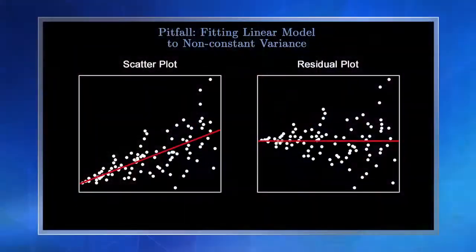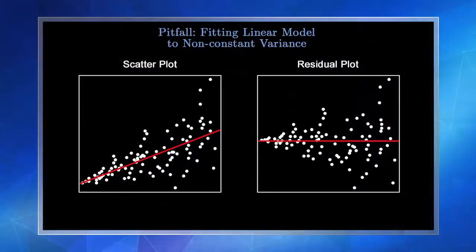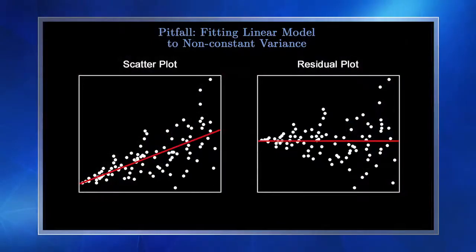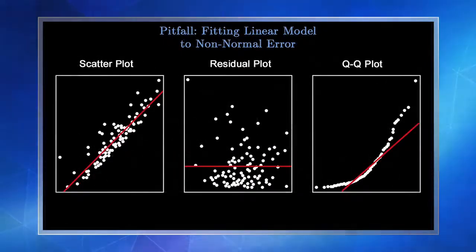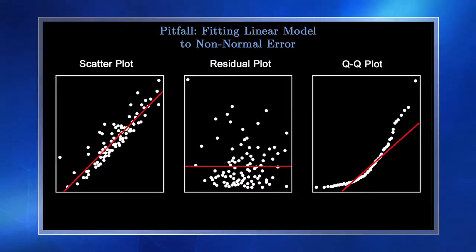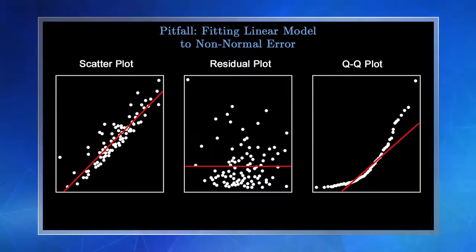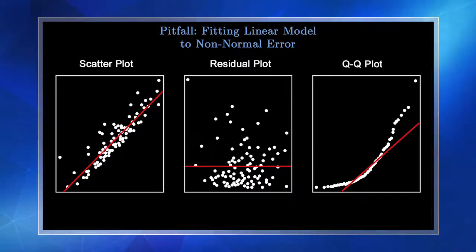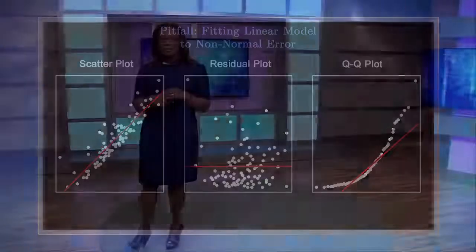The second pitfall is fitting a linear model to data with non-constant variance. The variance of y is increasing as x increases — still heteroscedastic. The third pitfall is fitting what appears to be a good model but actually has non-normal error. The initial scatter plot might fool us into fitting a linear regression, but look at those residuals — they aren't really centered at zero, and the QQ plot clearly shows they're far from normality. But all's not lost — if your data is heteroscedastic or non-normal, in the next lecture we'll talk about simple transformations to satisfy your assumptions.